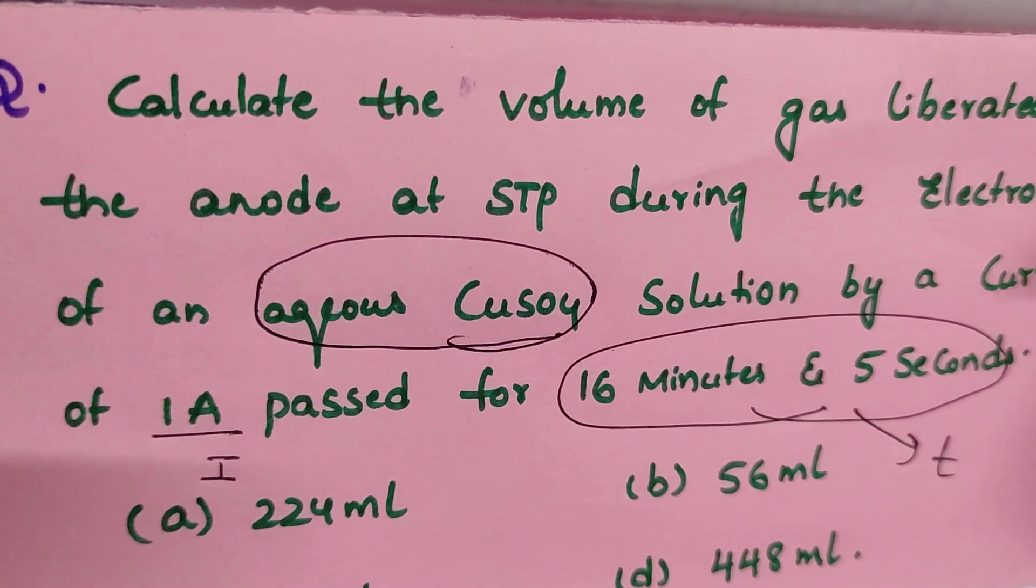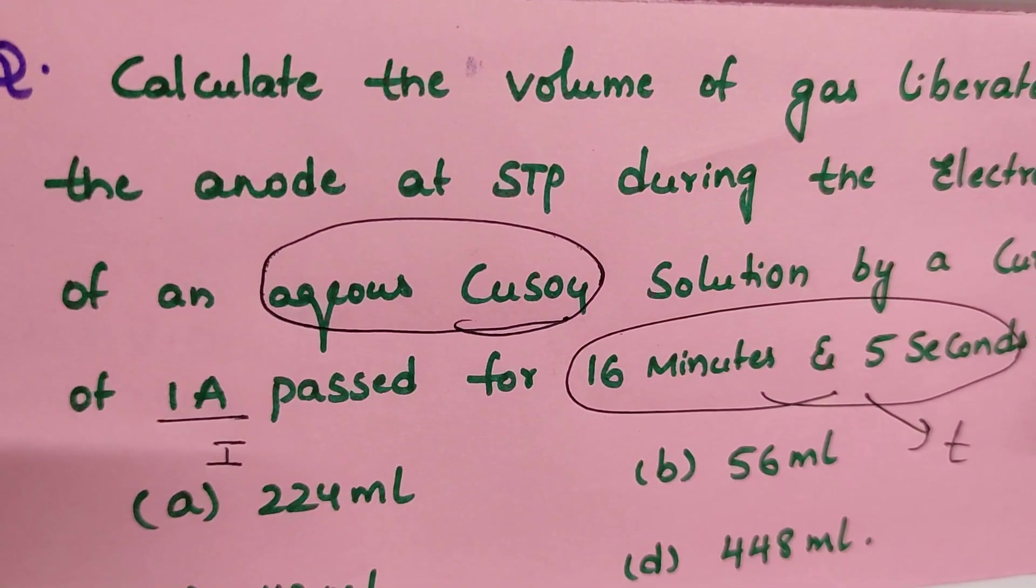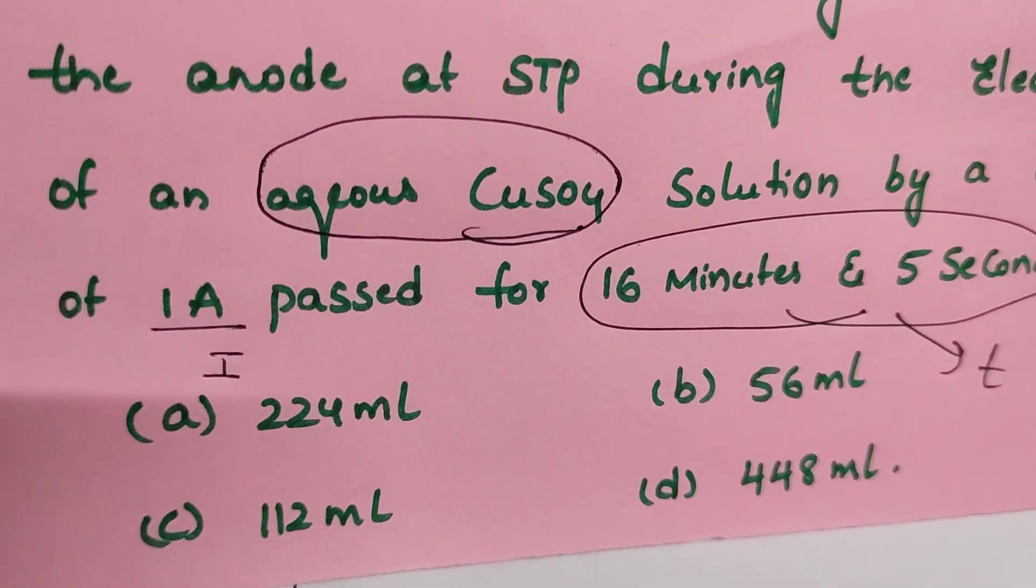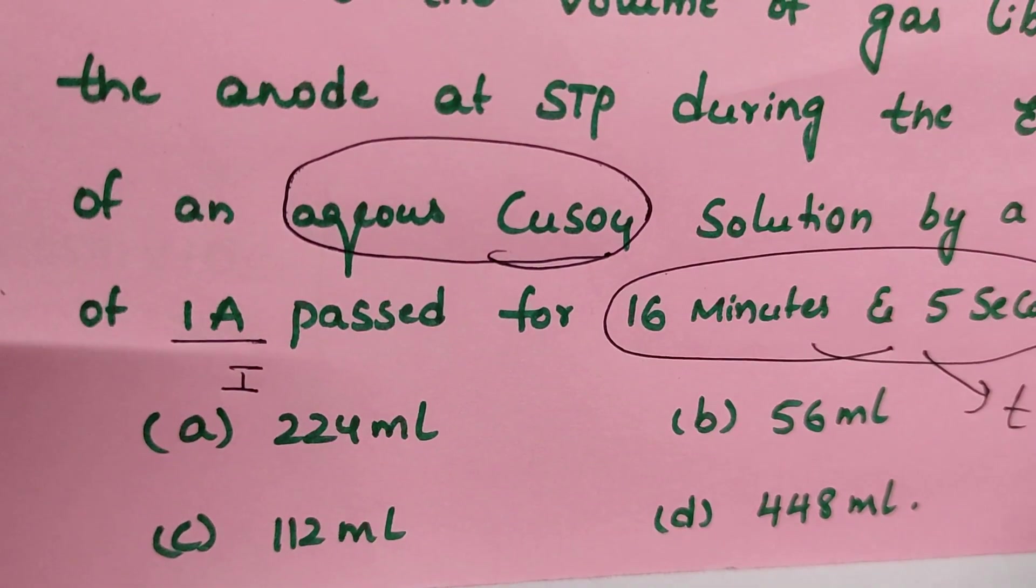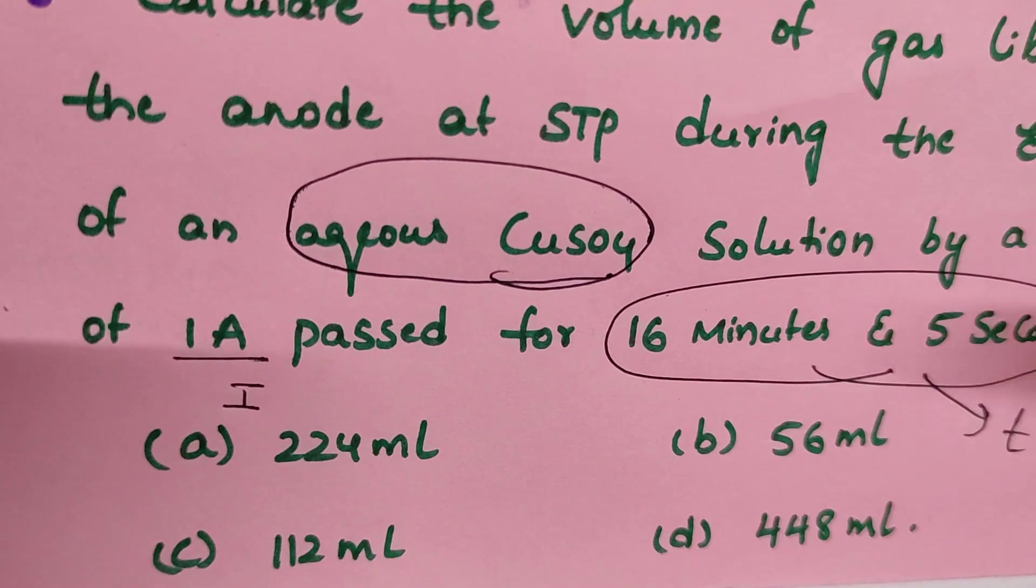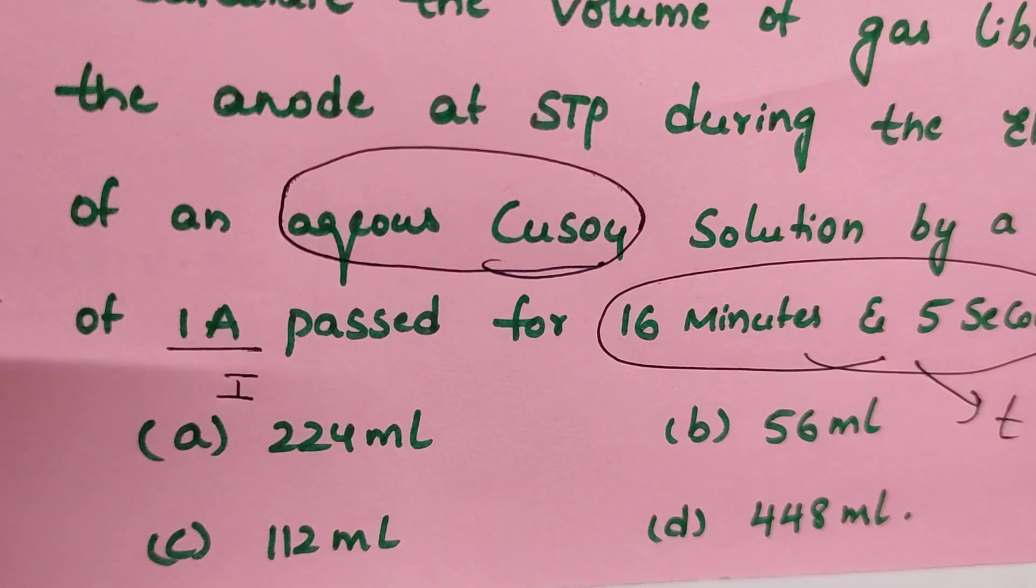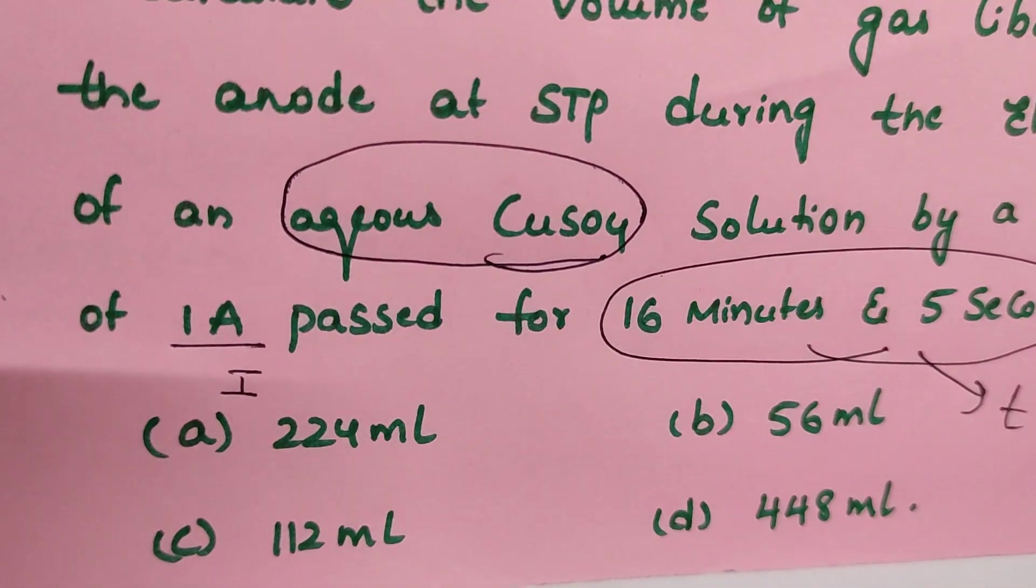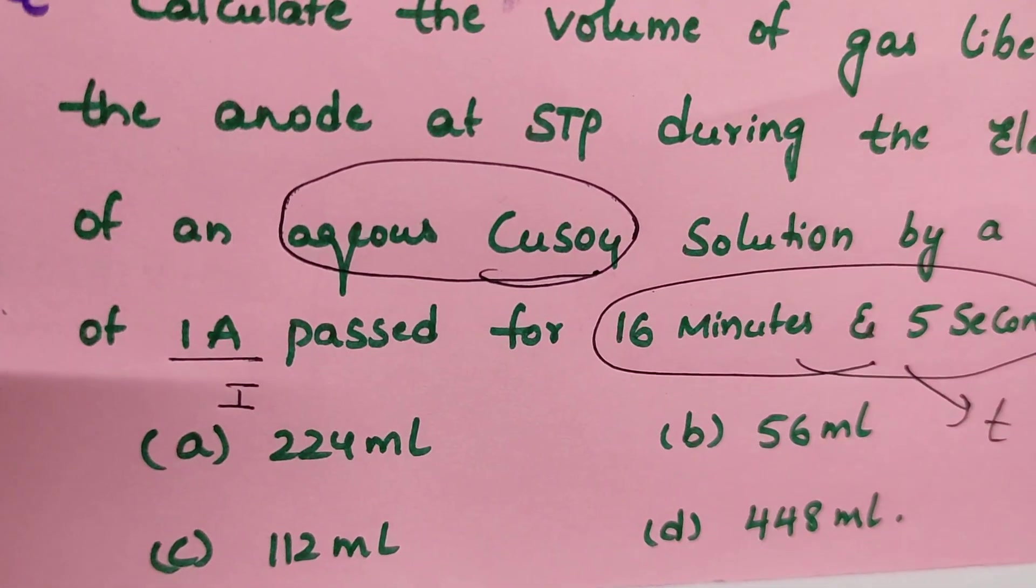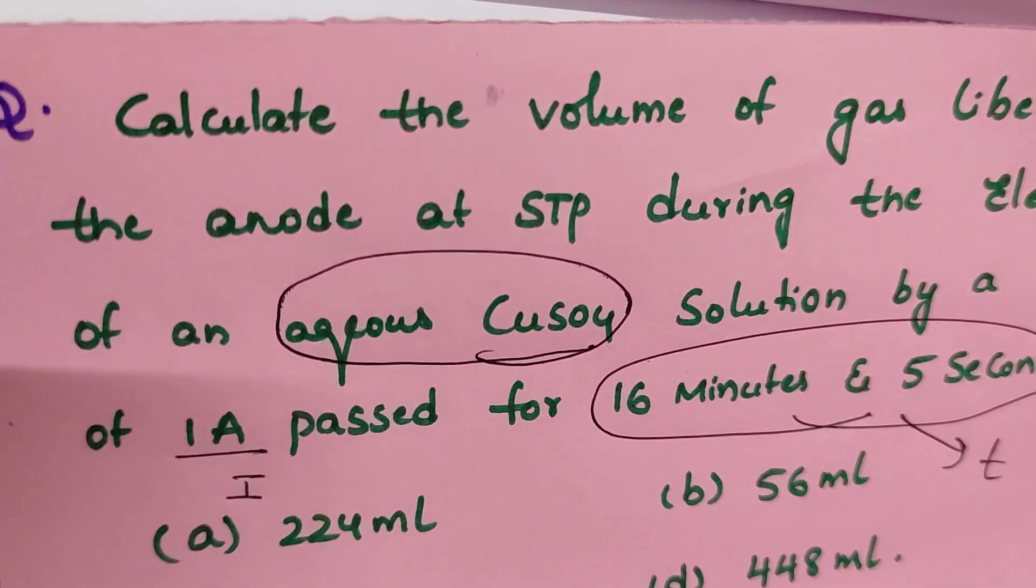I told you to watch the trick to find the products obtained at cathode and anode. That is one of the best videos. I'm going to give that link in the description. Aqueous copper sulfate product at anode is oxygen. Oxygen valence factor, as I told you, 4 is the valency factor.